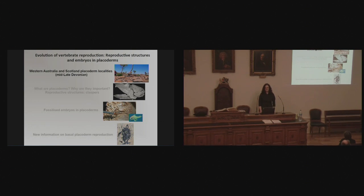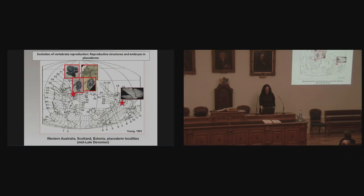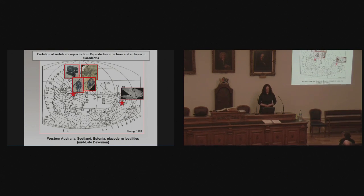Beginning with some nice photos of placoderm localities in Scotland and Western Australia. This is a paleogeographic map from the mid to late Devonian, showing the localities I'm going to be talking about today and some of the placoderms associated with them. We have ones in the UK and Estonia, but also in Western Australia.